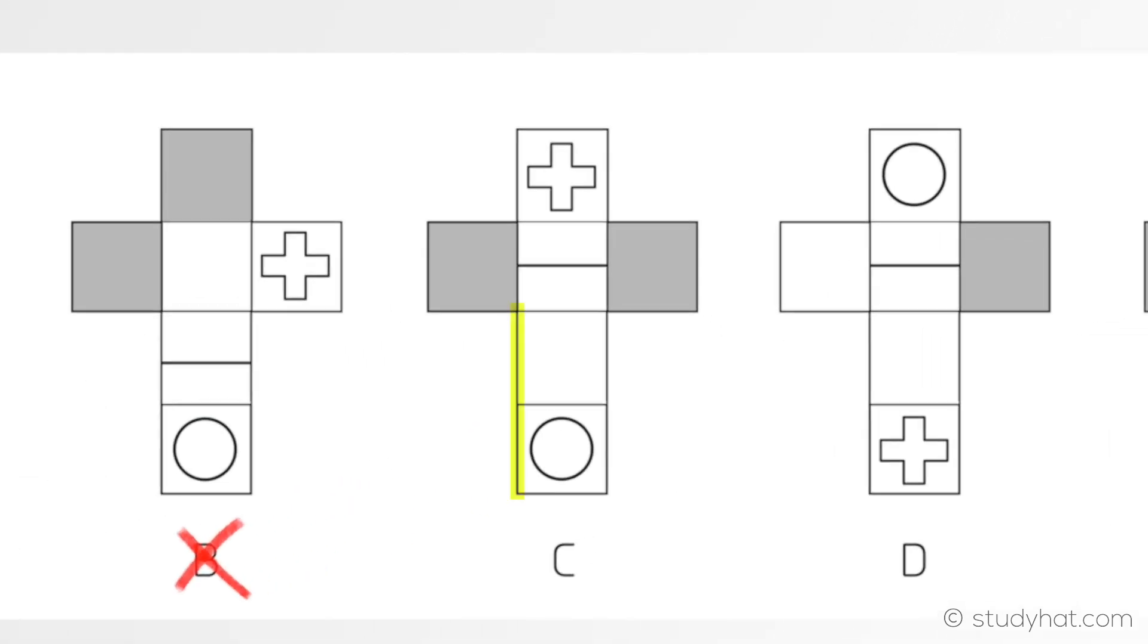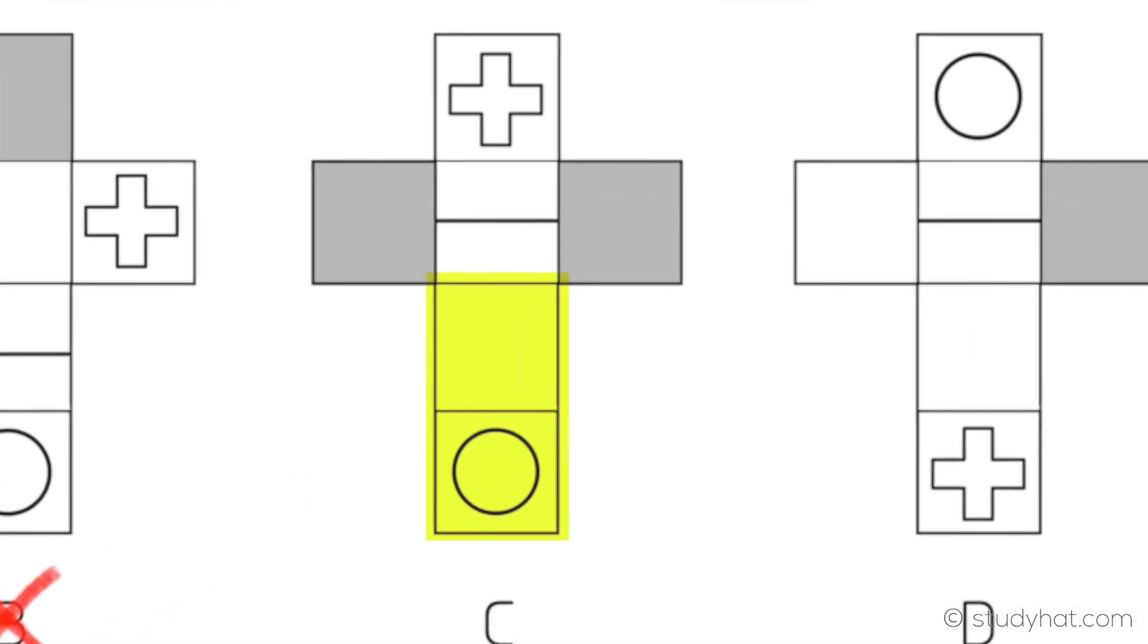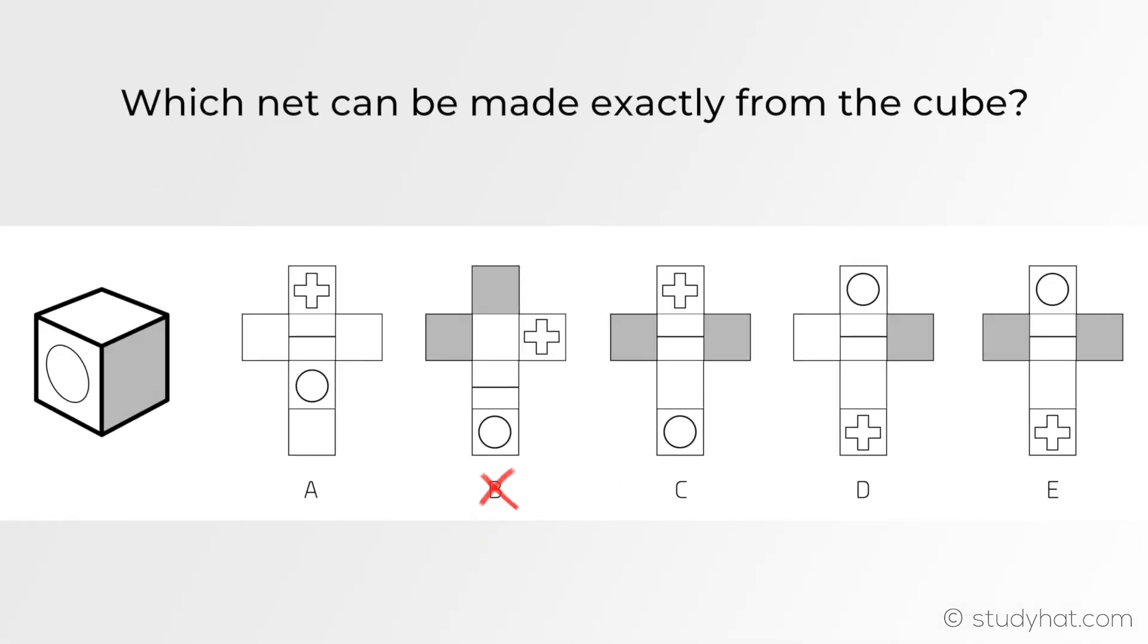C is similar to A in terms of both the circle and clear face are next to each other so we'll come back to it. D once again has opposite faces this grey face and this clear face are together in the figure therefore the answer can't be D.